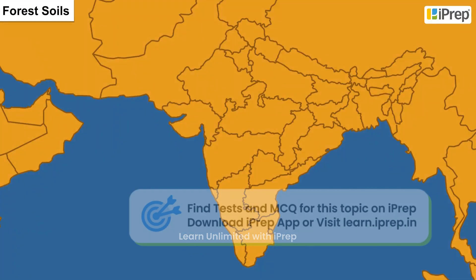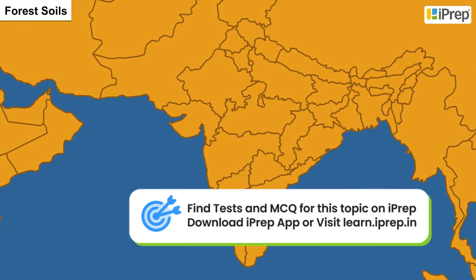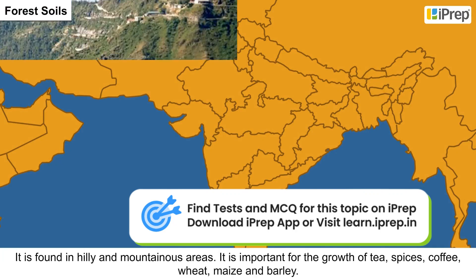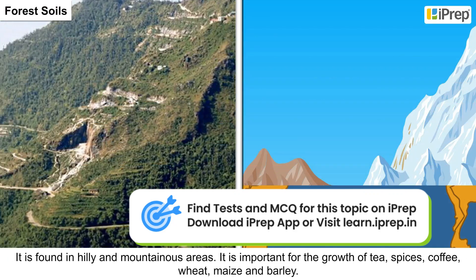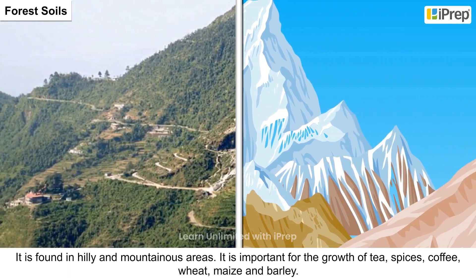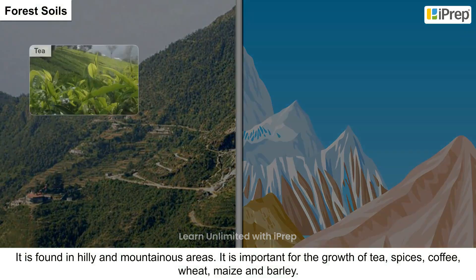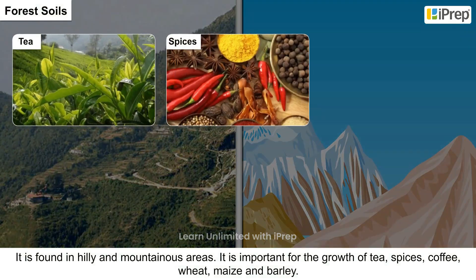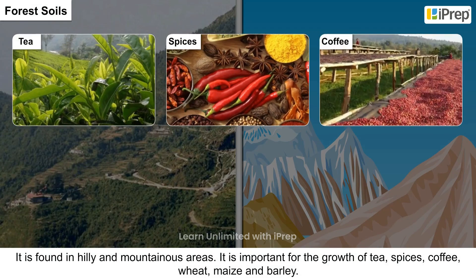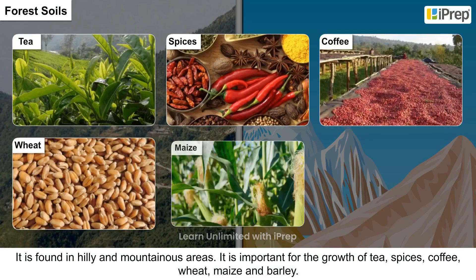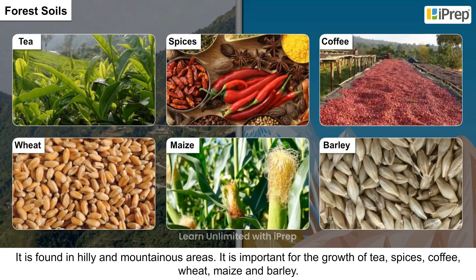Forest soils are found in hilly and mountainous areas. They are important for the growth of tea, spices, coffee, wheat, maize, and barley.